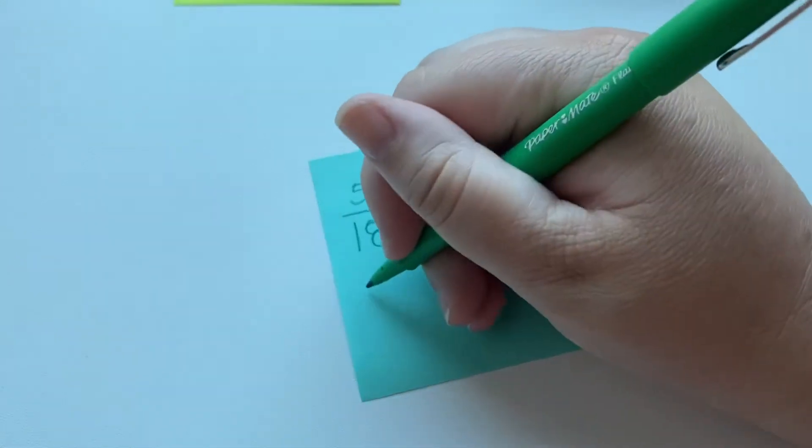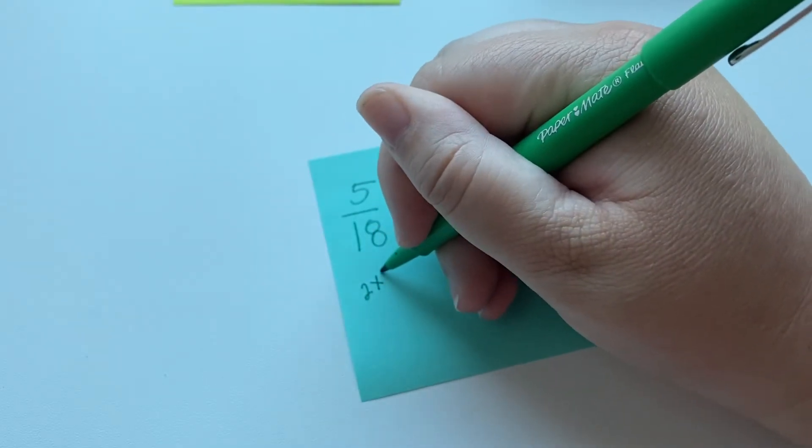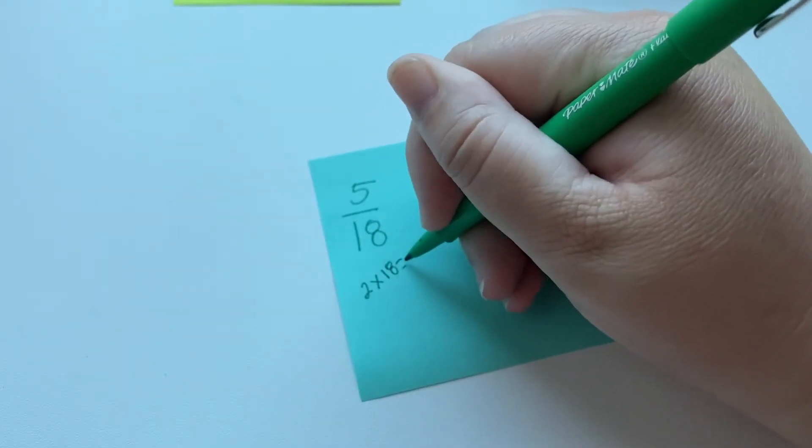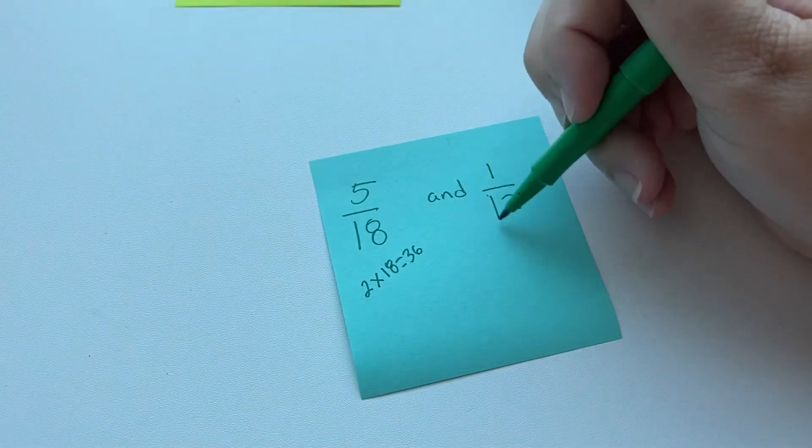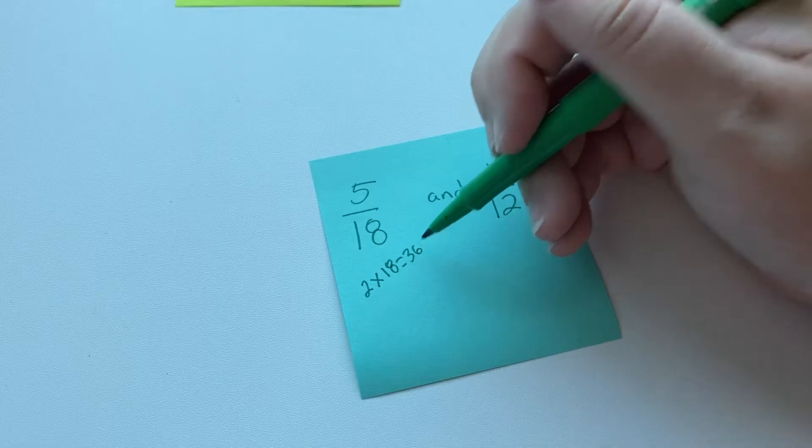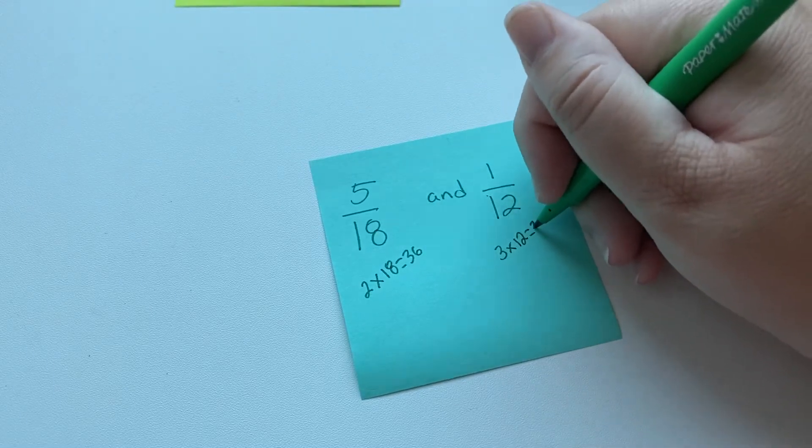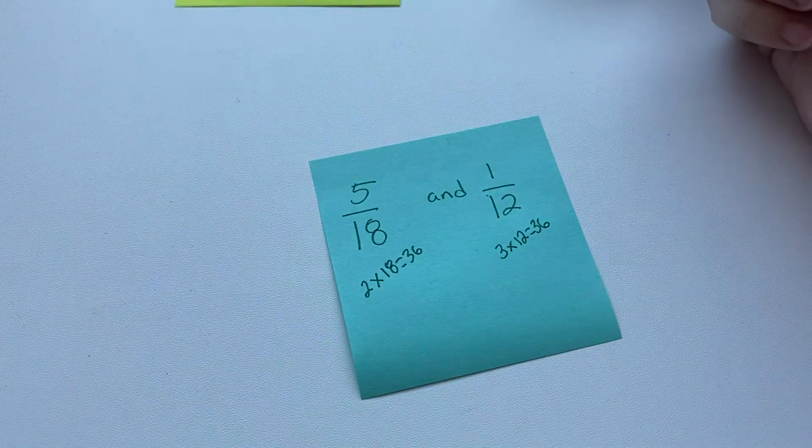So you take the bigger one, and you start by multiplying it by two. So 18 times two equals 36. And then you see if the smaller denominator goes into that. It does. 12 goes into 36 three times. So that's three times 12 equals 36. That's our least common multiple.